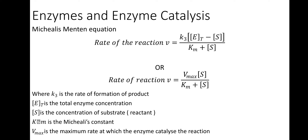The Michaelis-Menten equation: rate of the reaction V = K3 × [E]T × [S] / (KM + [S]), or equivalently V = Vmax × [S] / (KM + [S]), where K3 is the rate of formation of the product, [E]T is total enzyme concentration, [S] is concentration of the substrate, KM is the Michaelis constant, and Vmax is the maximum rate at which the enzyme catalyzes the reaction. Thank you.